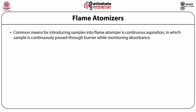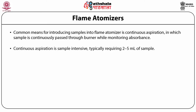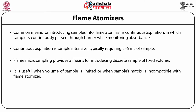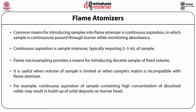The most common means for introducing samples into a flame atomizer is continuous aspiration, in which the sample is continuously passed through the burner while monitoring the absorbance. Continuous aspiration is sample-intensive, typically requiring 2 to 5 mL of sample. Flame microsampling provides a means for introducing a discrete sample of fixed volume and is useful when the volume of sample is limited or when the sample's matrix is incompatible with the flame atomizer. For example, the continuous aspiration of samples containing a high concentration of dissolved solids such as sea water may result in the buildup of solid deposits on the burner head.